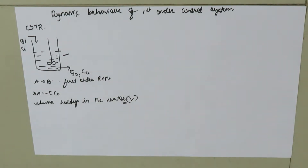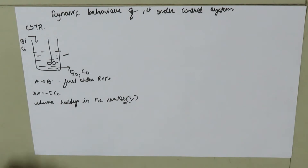Today we are going to discuss the dynamic behavior of a first order control system by taking an example of a continuous stirred tank reactor (CSTR).